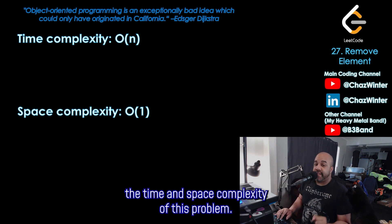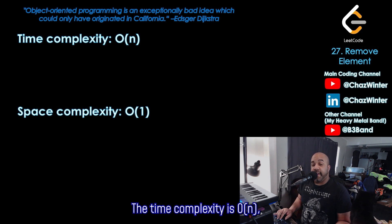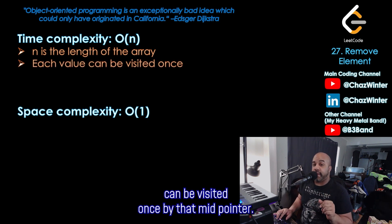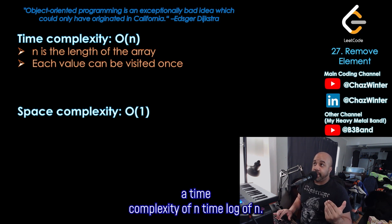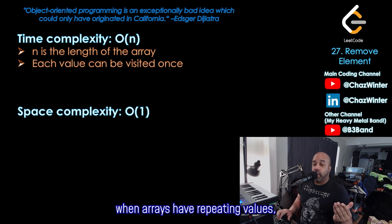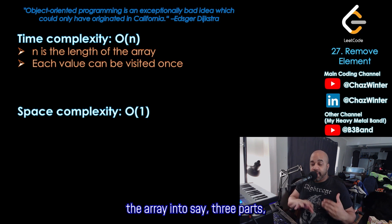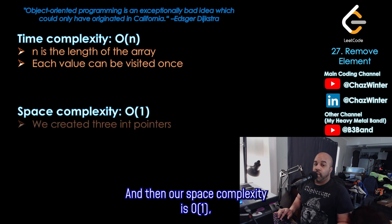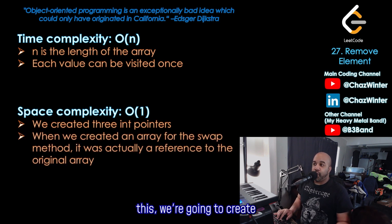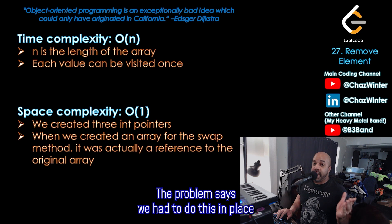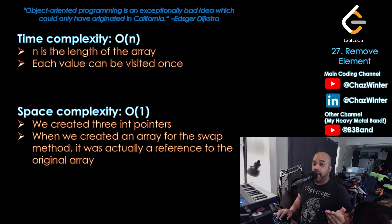Back at the computer, let's talk about time and space complexity. The time complexity is O(n), where n is the length of the array, because each value can be visited once by the mid pointer. This is great because the most efficient general sorting algorithms are O(n log n). Dijkstra showed that when arrays have repeating values, you can partition into three parts and improve time complexity. The space complexity is O(1) — we create three integer pointers. When we create an array for the swap method, it's just a reference to the original array, not a new one. And we weren't allowed to copy the array anyway since the problem requires an in-place solution.